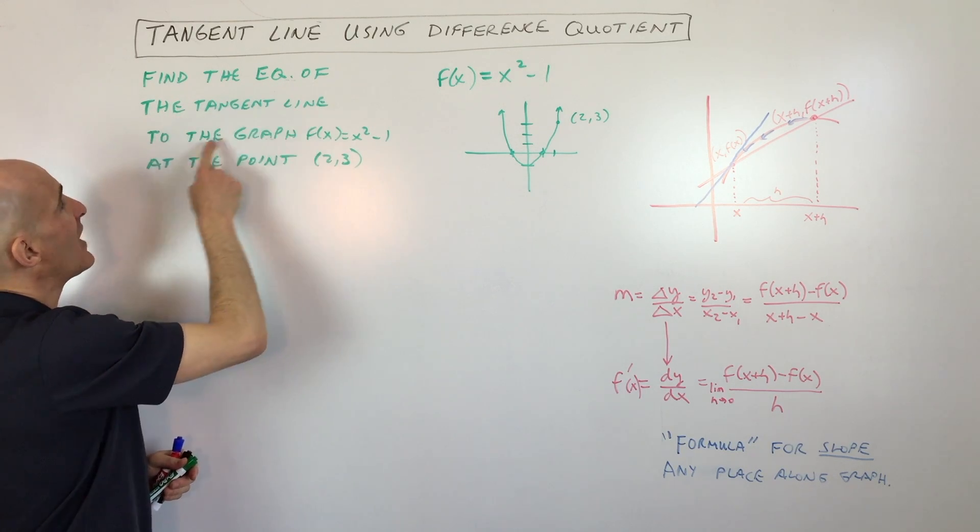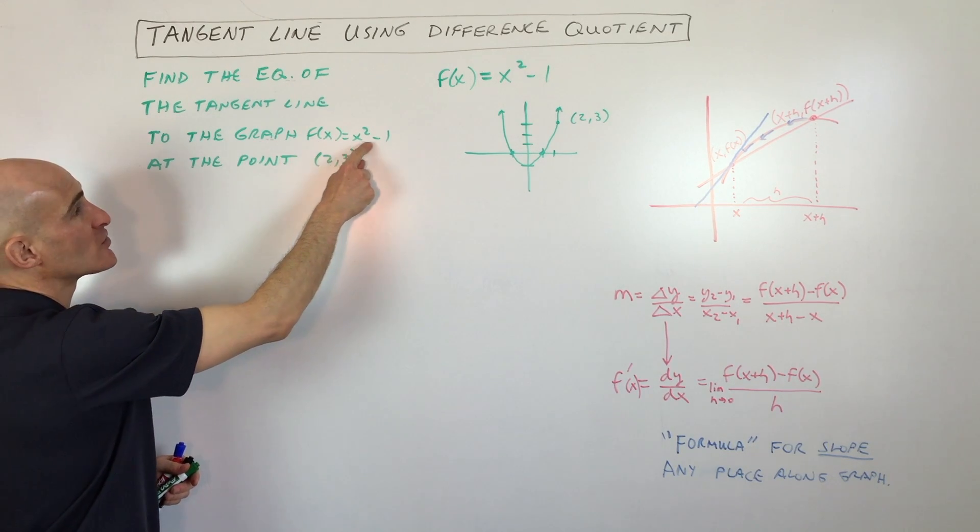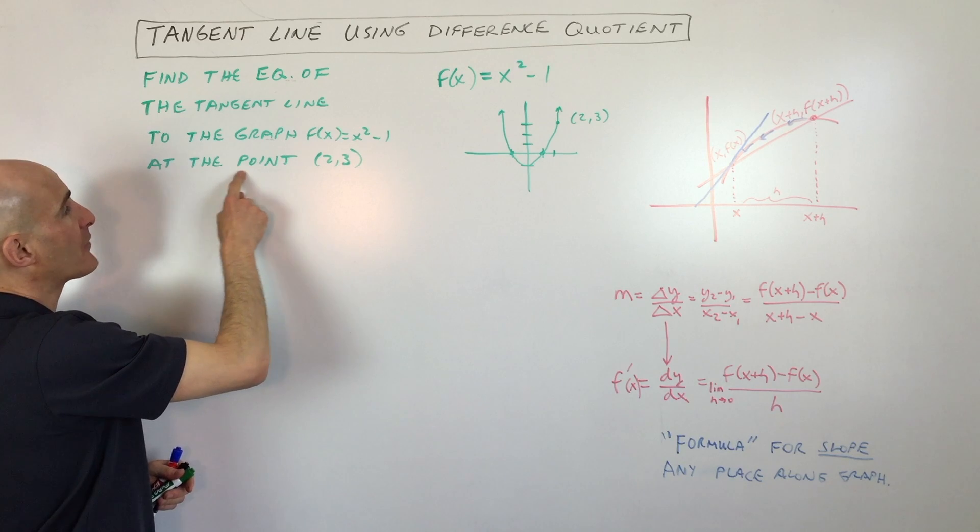It says find the equation of the tangent line to the graph of f(x) = x² - 1 at the point (2, 3).